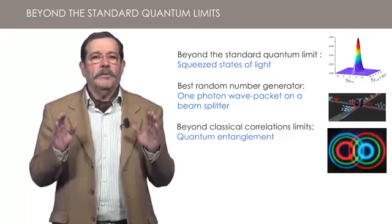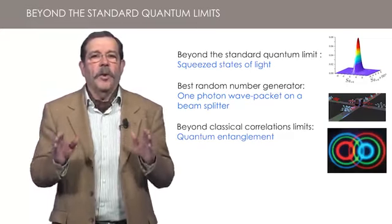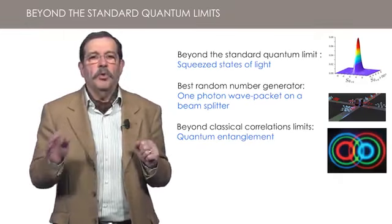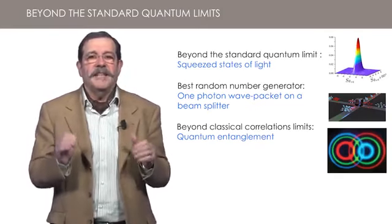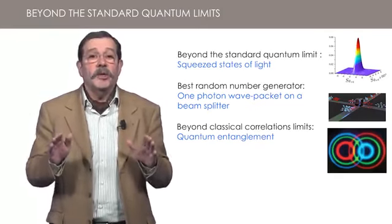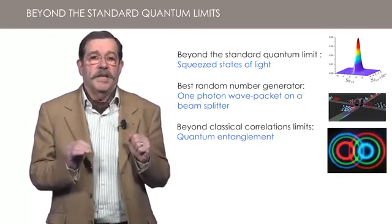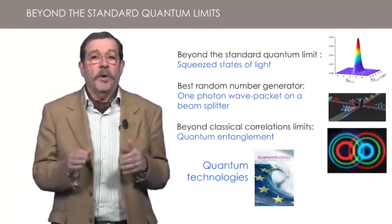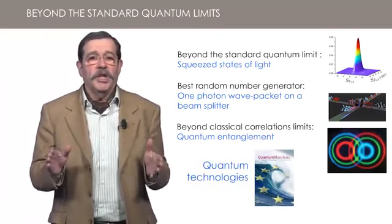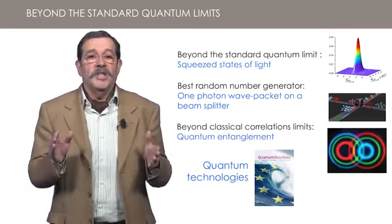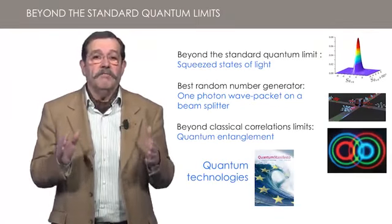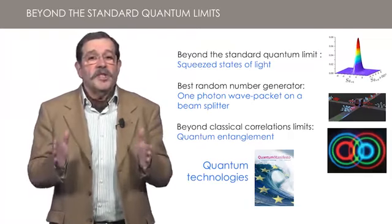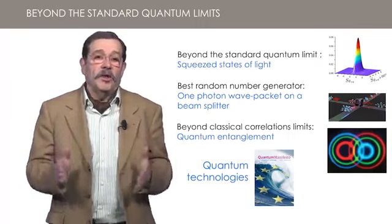By learning how to describe classical phenomena in the quantum formalism, you have prepared yourself to understand how it is possible to go beyond the limits existing for classical light, which were for a long time considered ultimate limits. The means to go beyond these limits opens the domain of quantum metrology and quantum information, that is to say, quantum technologies that can have a strong impact in our society. See you at the next lesson to discover an amazing quantum technology.